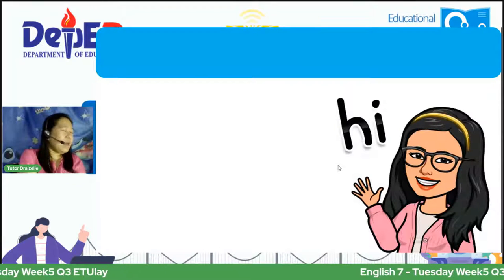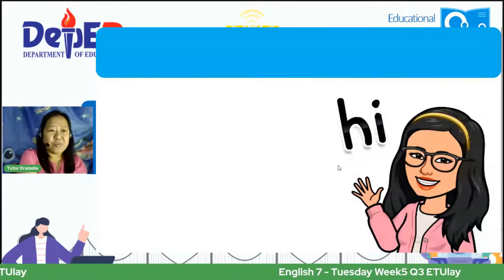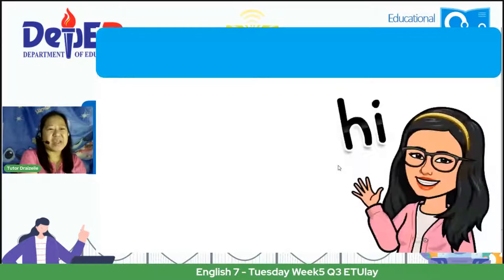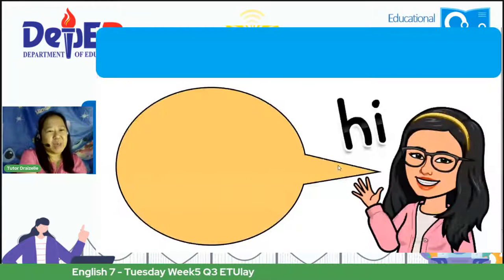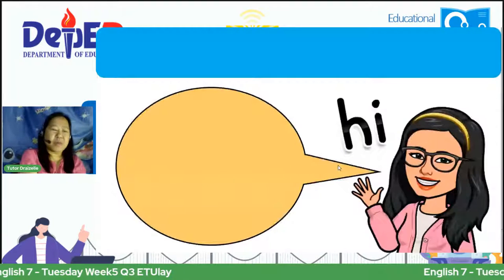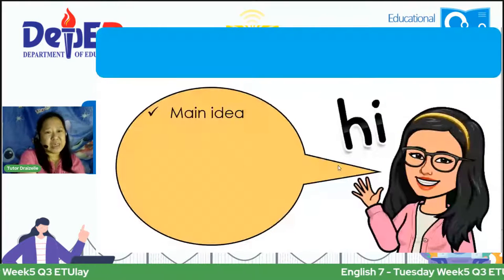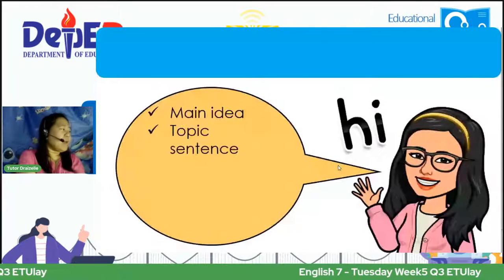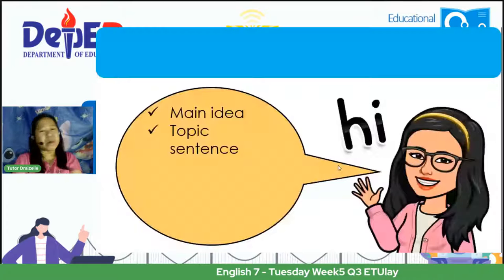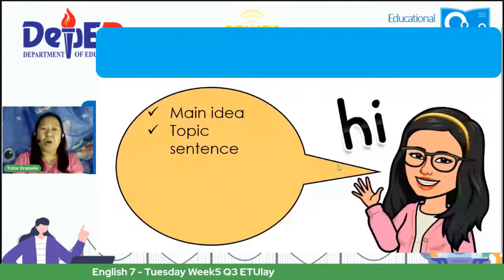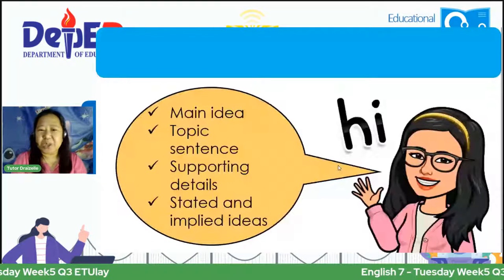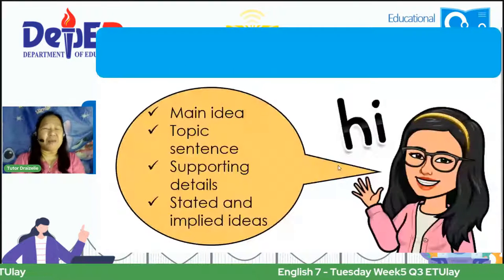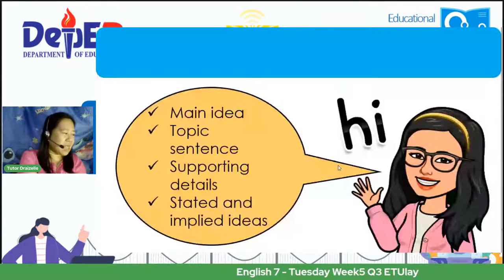For today's lesson, we will be defining the following terms: first, the main idea; second, the topic sentence; third, supporting details; and we will also be learning about stated and implied ideas. This is the scope of our lesson this afternoon.